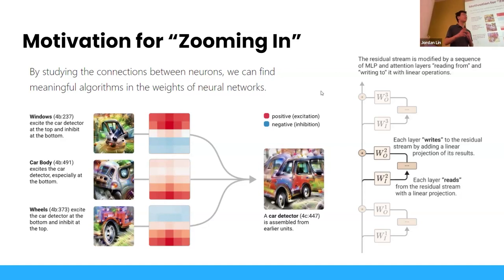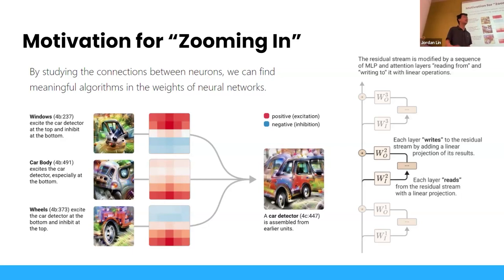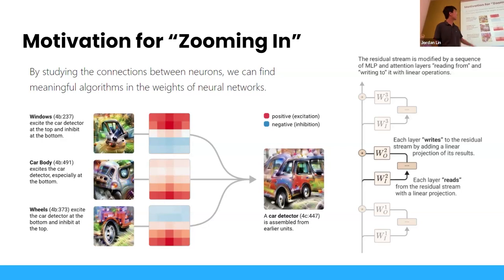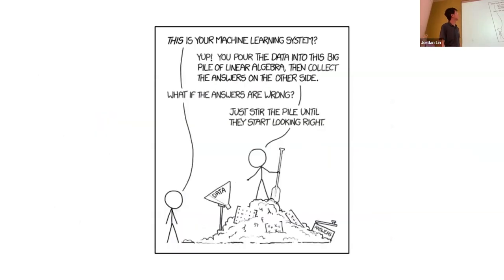We can actually understand pretty well what's happening inside our CNN that allows it to detect cars. If we ablate it — replace these filters with all zeros — its performance on cars will tank. This is kind of what we want to do with transformers as well: take a look at the weights, understand the information in the residual stream, and understand what kind of processing is going on in the attention phase.